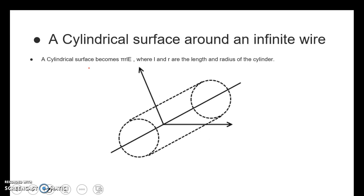For the cylindrical surface around an infinite wire, it's 2πrLE, where L and r are the length and radius of the cylinder.